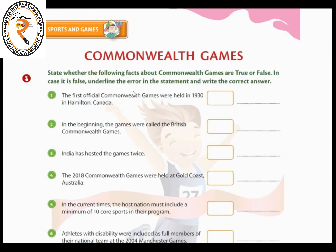Next is the Commonwealth Games section. Find whether these statements are true or false, and if false, underline the error and write the correct answer. The first official Commonwealth Games were held in 1930 in Hamilton, Canada — true. In the beginning the games were called the British Commonwealth Games — false; it was called the British Empire Games. India has hosted the games twice — false; underline 'twice' and write 'once,' that is in 2010.